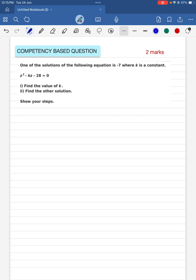So first let us find the value of k and then put it back in the given equation. We know that the value of z I can take as equal to minus 7 and the given equation is z squared minus kz minus 28 equal to 0. Why can we substitute z as equal to minus 7? Because it is given to be one of the solutions of the equation.